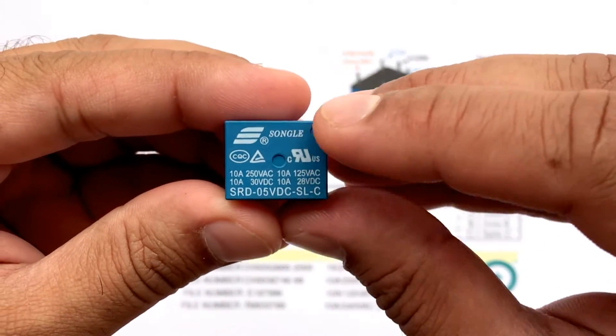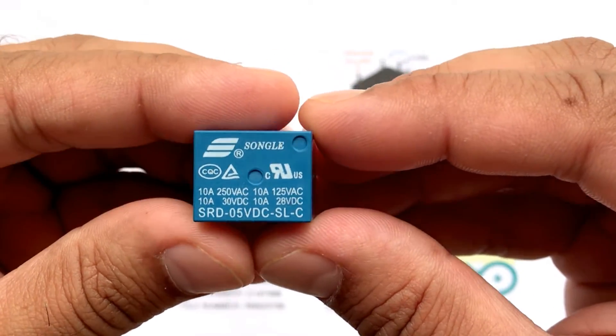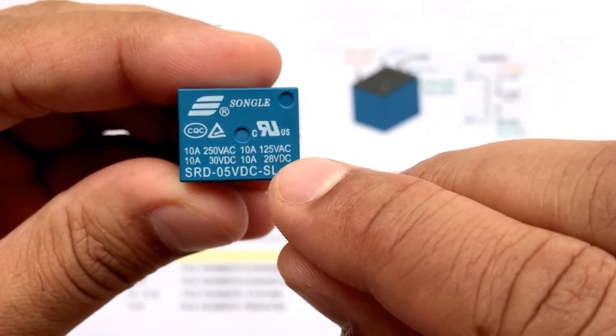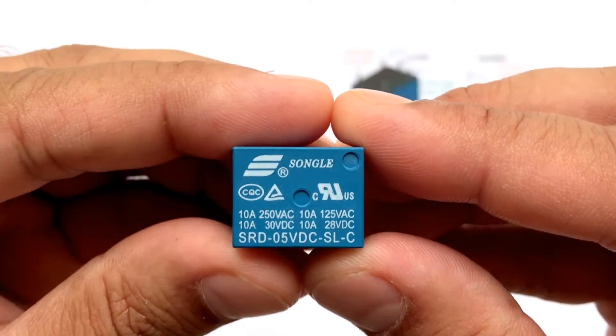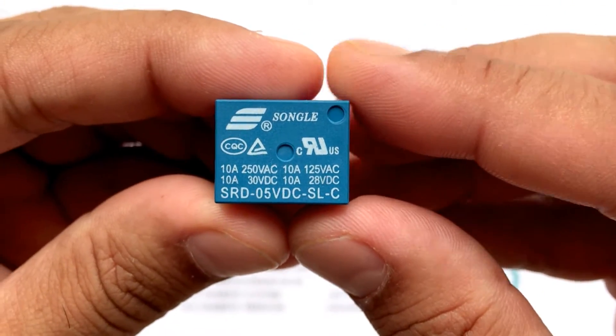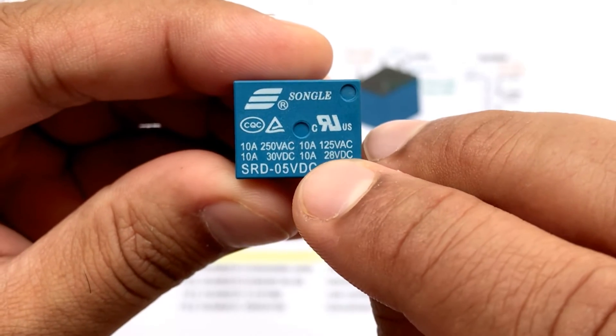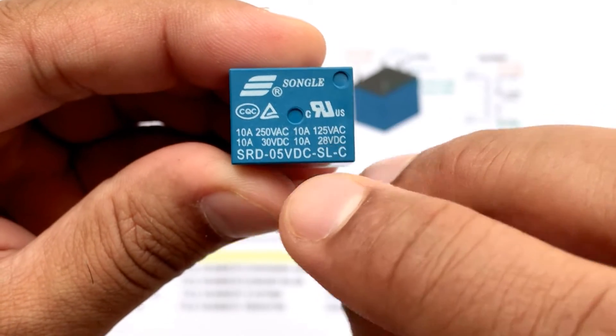Now, if you look at the top of the relay, the first thing we see is Songle, which is the name of the manufacturer. Then we see the current and voltage rating. It is the maximum current and or voltage that can be passed through the switch. It starts from 10A at 250V AC and goes down to 10A at 28V DC.